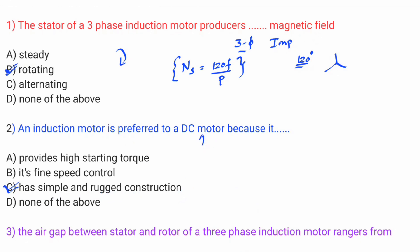In a DC machine there is a commutator problem: brushes, armature reaction, sparks. So we prefer the induction motor because it has simple construction, easy speed control is not needed in the same way, and it is strong and durable compared to DC machines.